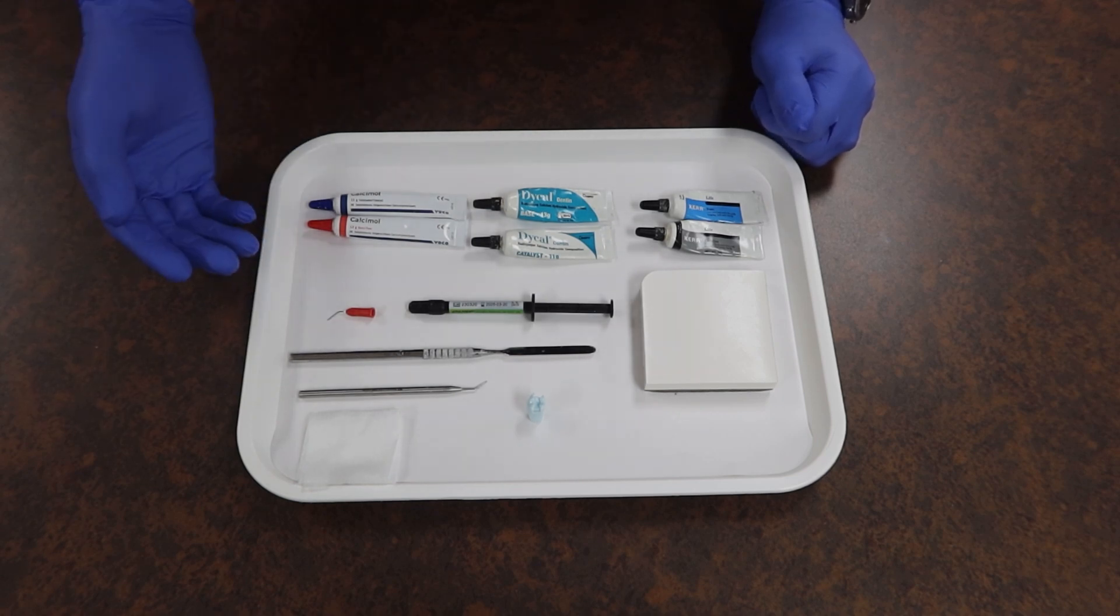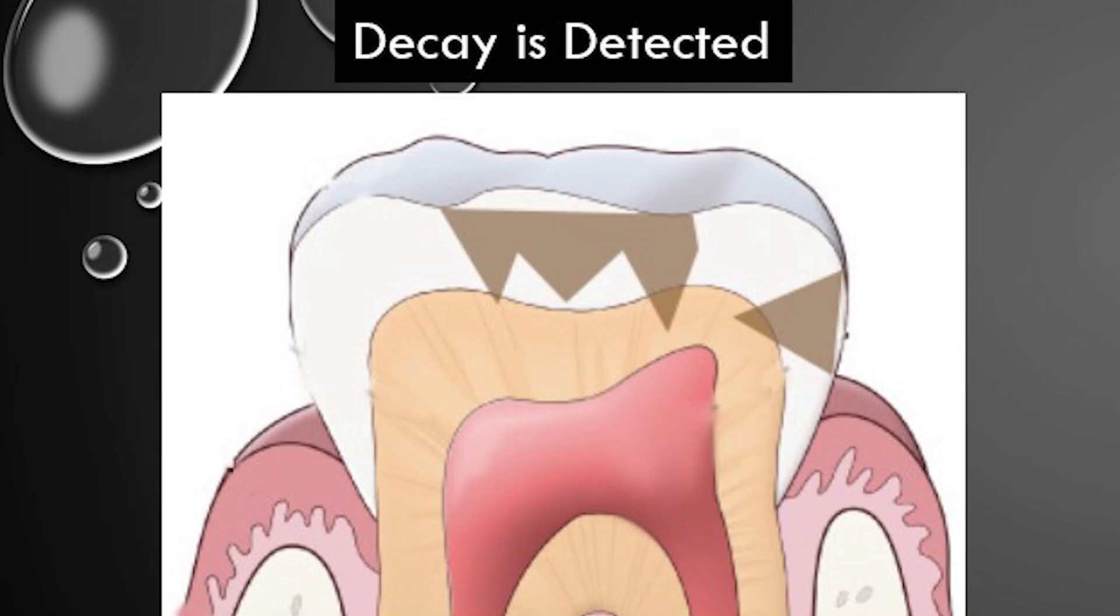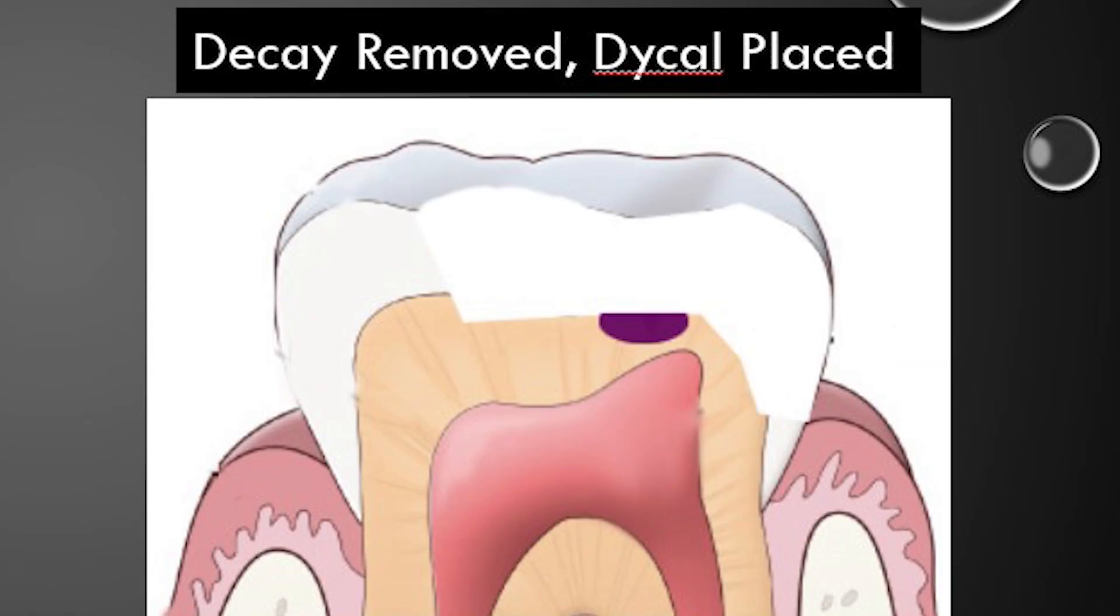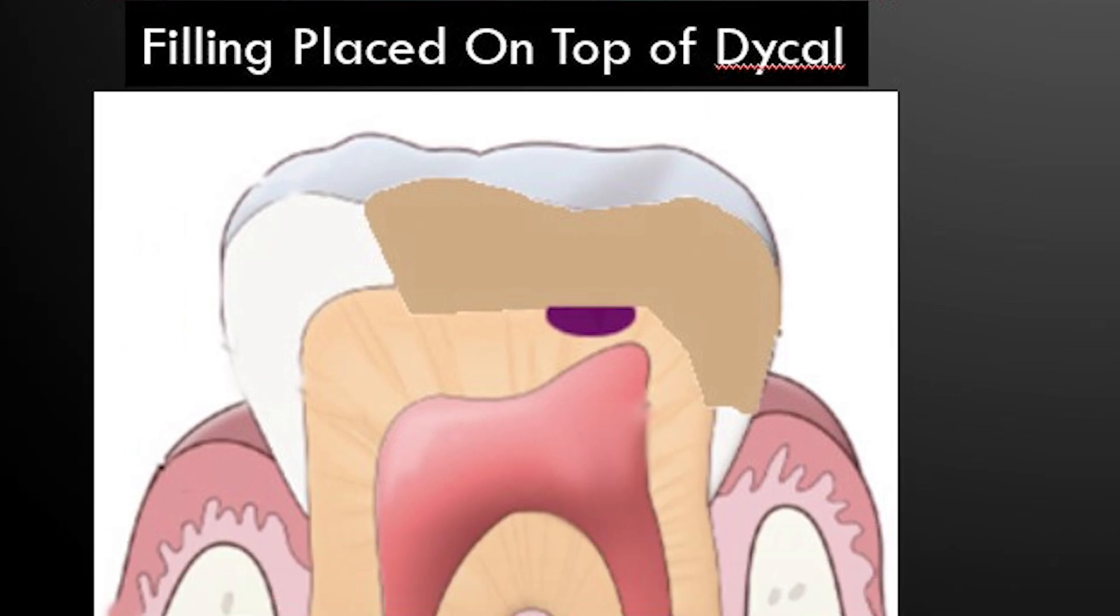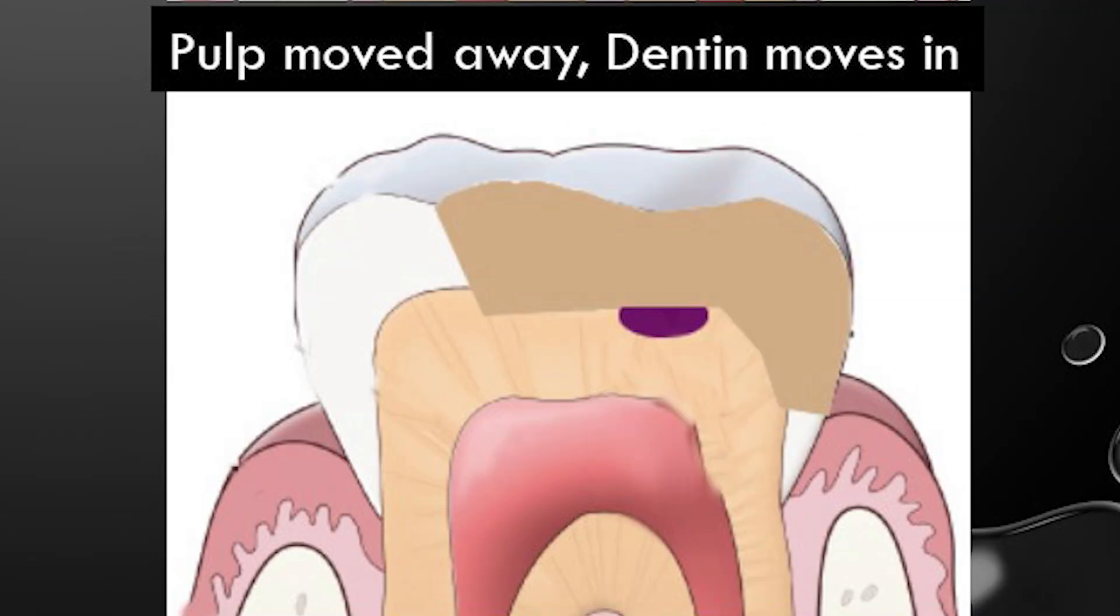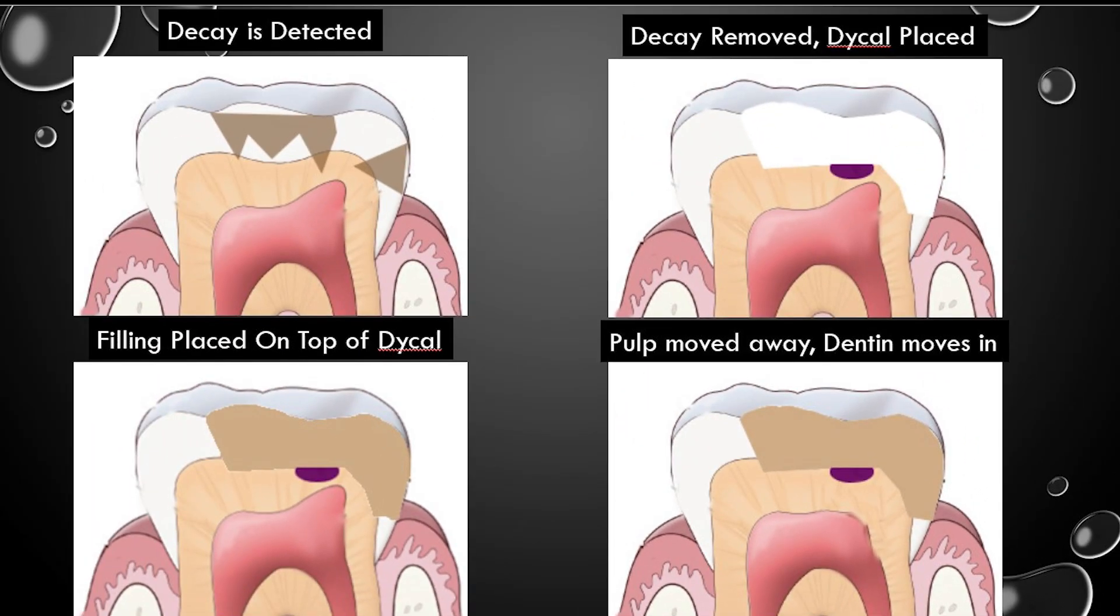In a situation where we would use the Dical like we have here, usually decay is detected. After that, the decay is removed and Dical is placed in the deepest area where a filling is placed over it and we wait a while before the dentin does its job and irritates the pulp to move just a little bit away from our area.